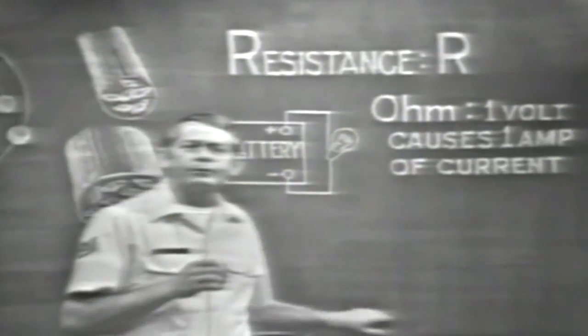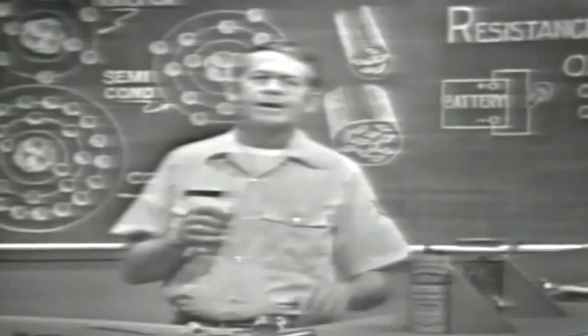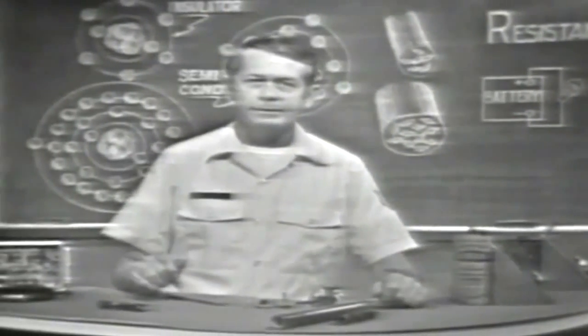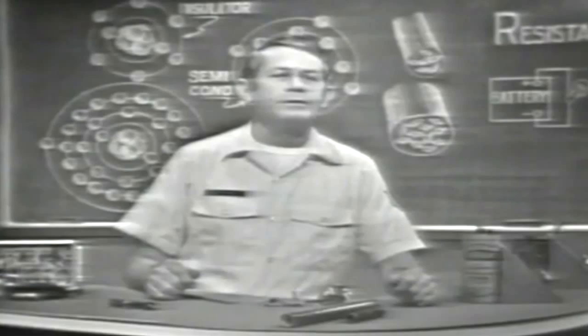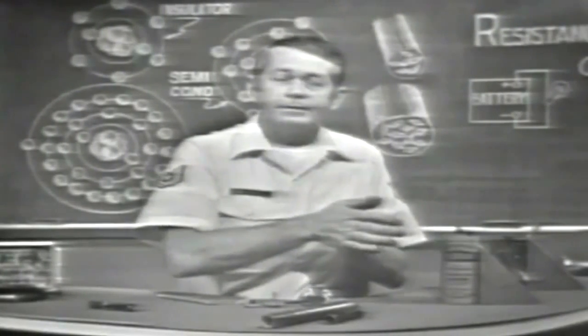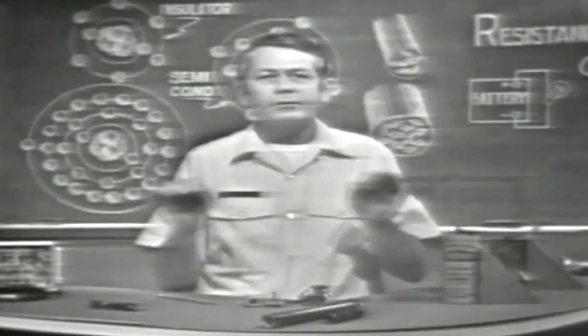To provide the various resistances needed in electronics, devices with specific ohmic values have been developed. These devices are called resistors, and basically they're semiconductor materials — not a good conductor, not a good insulator, exhibiting characteristics between these two. Let's look at some common resistor types.